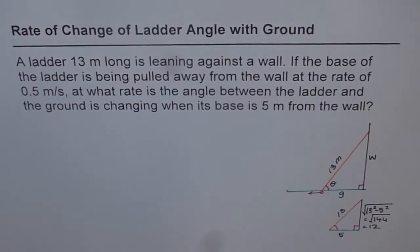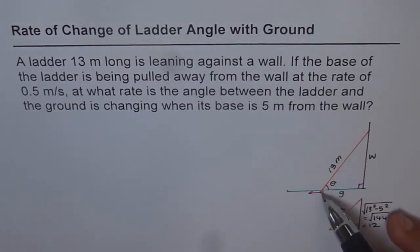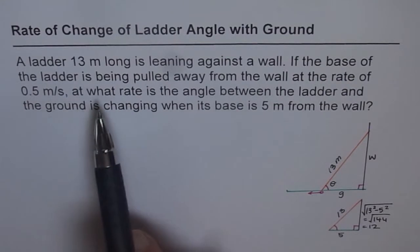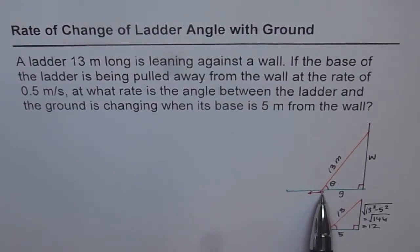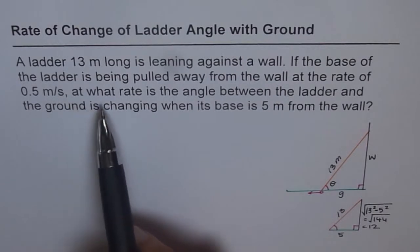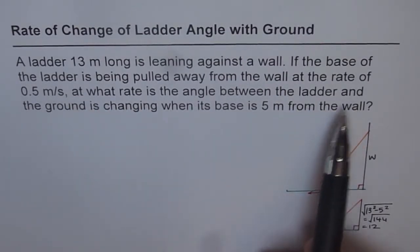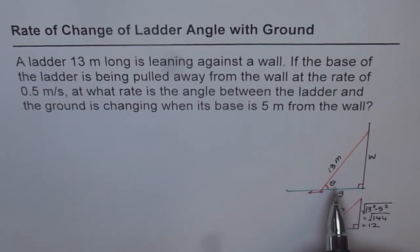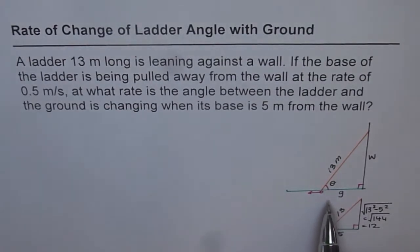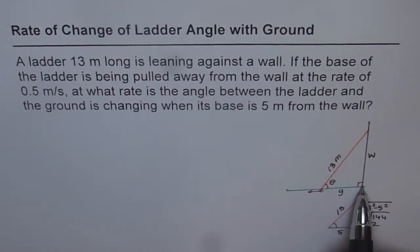Here is a very common example to discuss how to do rate of change when angles are involved. The question is: a ladder 13 meters long is leaning against a wall. The base of the ladder is being pulled away from the wall at the rate of 0.5 meters per second. At what rate is the angle between the ladder and the ground changing when its base is 5 meters from the wall?